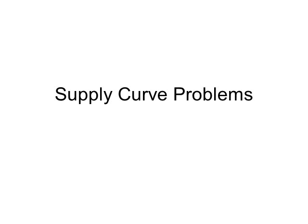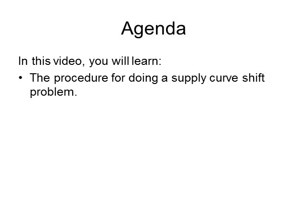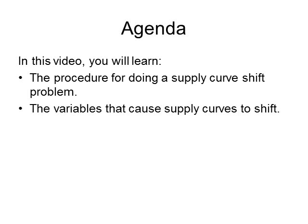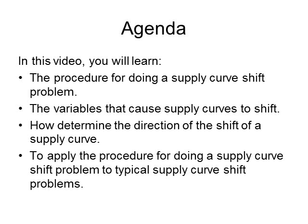One of the basic skills to understanding economics is understanding what happens to supply of goods and services when there are changes in the cost of doing business and changes in the company's ability to produce a good. In this video, you will learn the procedure for doing supply curve shift problems, variables that cause supply curves to shift, how to determine the direction of a shift, and how to apply the procedure to a typical supply shift problem.